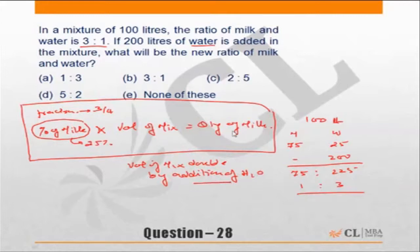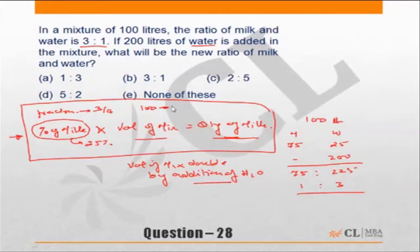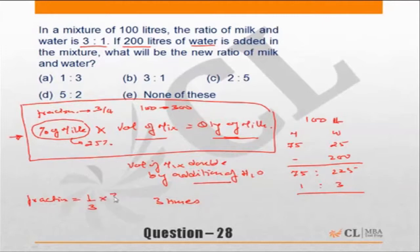By addition of water, the quantity of milk will remain the same. So whatever has been done to the volume of the mixture, the reciprocal of that will happen to the fraction of milk. In this question, the volume goes from 100 liters to 300 liters by addition of 200 liters of water — so the volume has become three times. If the volume becomes three times, the fraction of milk becomes one third. The original fraction of milk was 3/4, so the new fraction is 3/4 × 1/3 = 1/4. So one fourth is milk, three fourths is water, and the ratio becomes 1 is to 3.